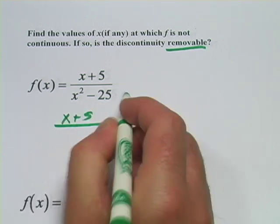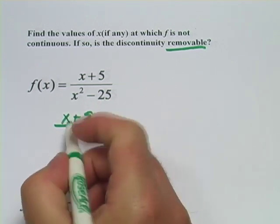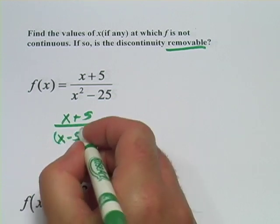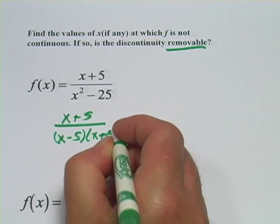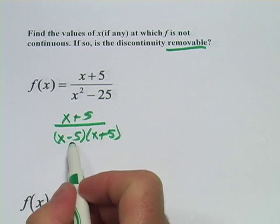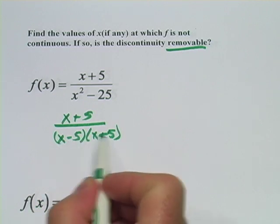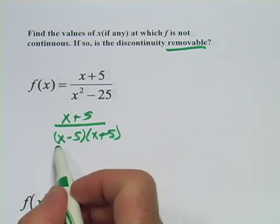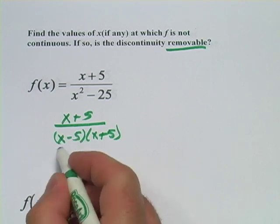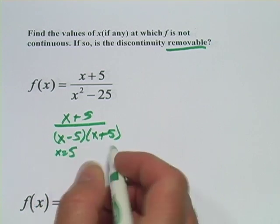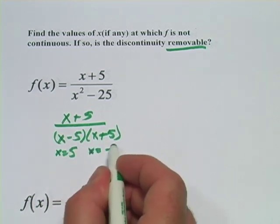So we have x plus 5 on the top and on the bottom. This is a difference of squares, so that's x minus 5 and x plus 5. Now, the discontinuities happen at the points where these are zero, so we set each of these equal to zero. x minus 5 equals zero. That comes out to x equals 5. And this one comes out to x equals negative 5.